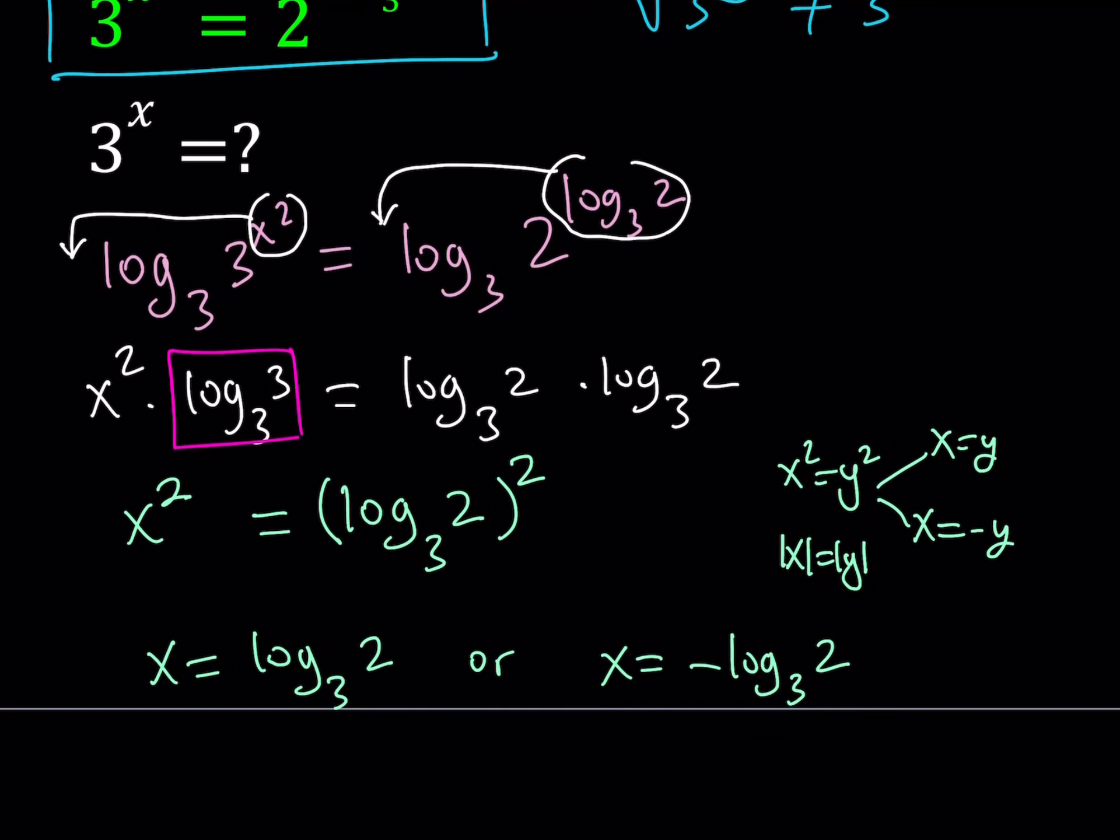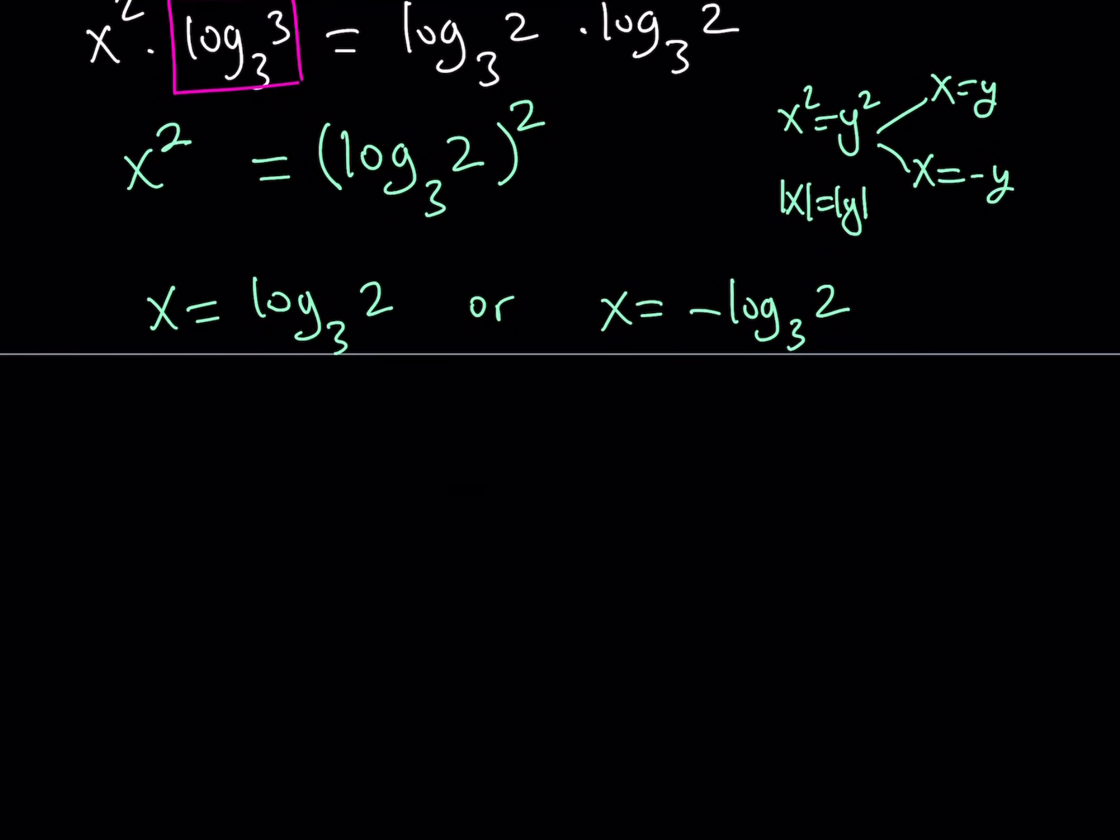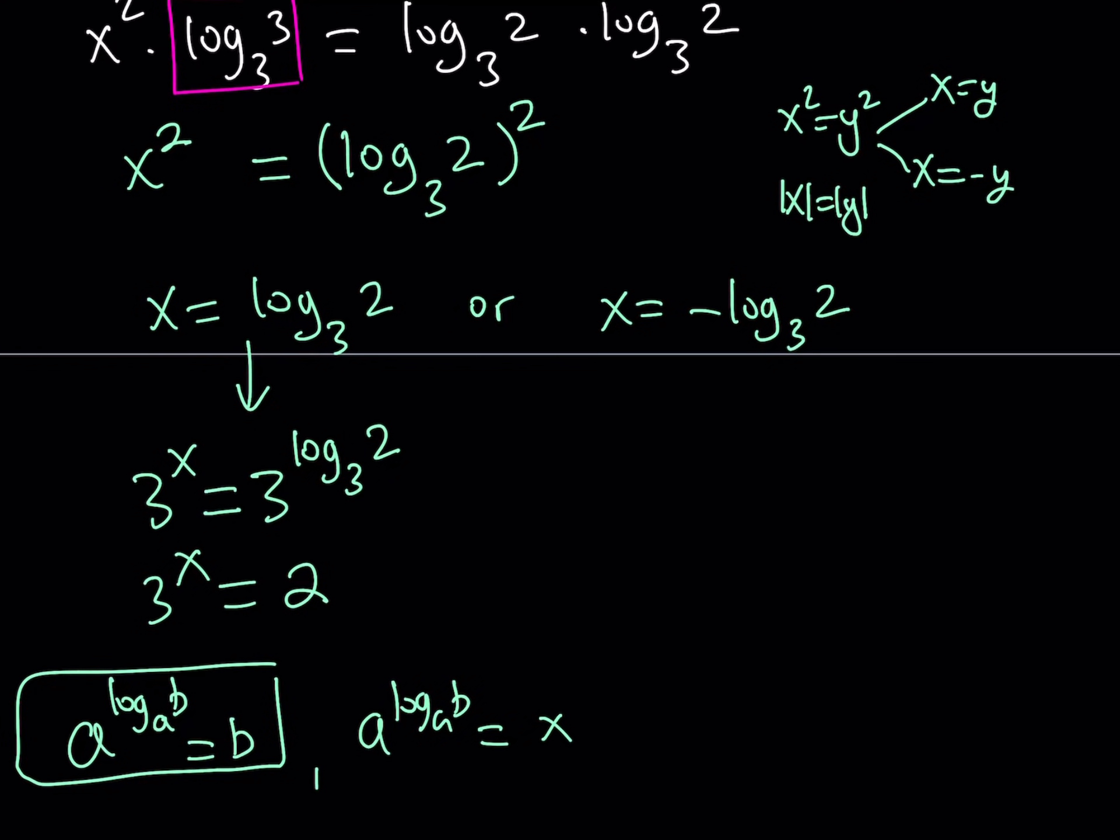So this is the x value, but remember, we are trying to find 3 to the power x. So let's substitute. If x is log 2 with base 3, then 3 to the power x equals 3 to the power log 2 with base 3, and from properties of logarithms this equals 2. Now, what does that property tell us? The property tells us that if you have a to the power log b with base a, this equals b. This property is very easy to prove: you can set it equal to x, then log both sides with base a, and then you get that b equals x. So 3 to the power x becomes 2 from here.